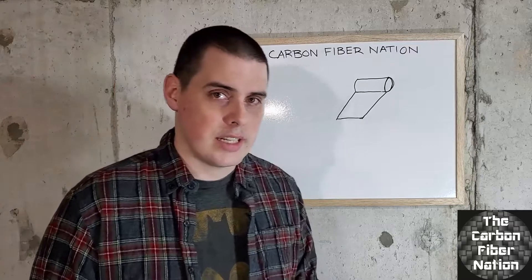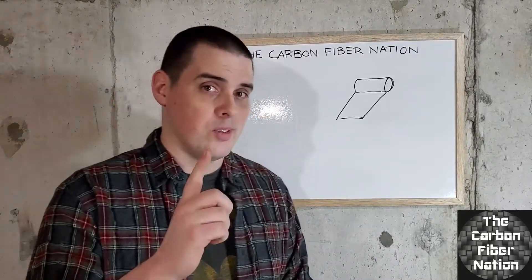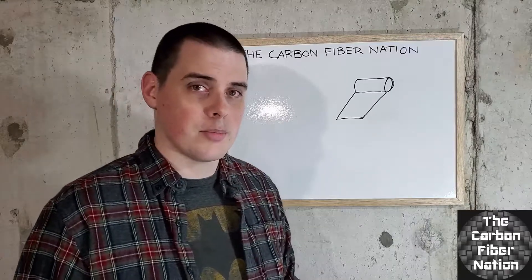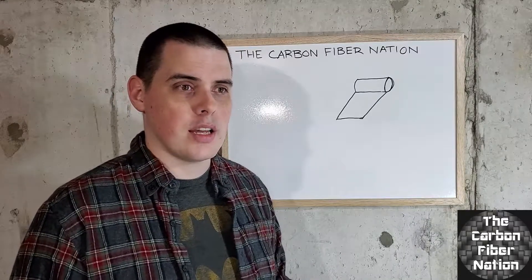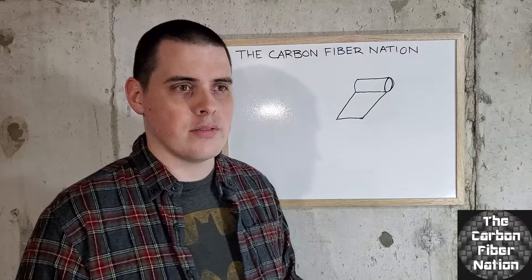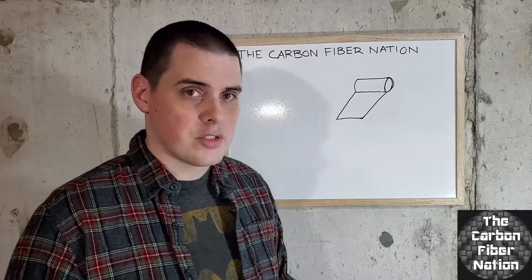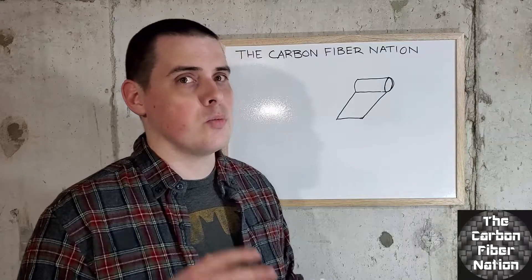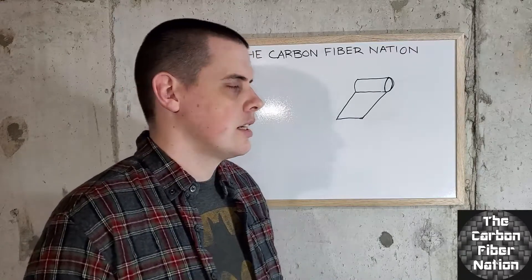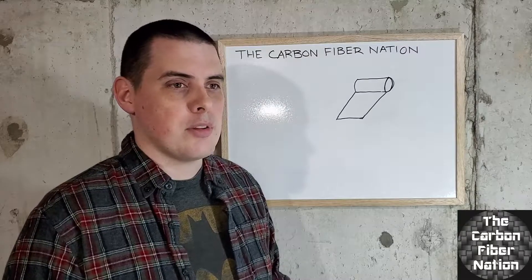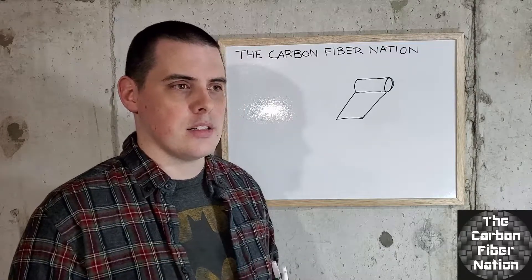First thing we're gonna be talking about today, episode 1, will be what are you looking at when you're looking at carbon fiber. Most carbon fiber comes in a twill or a woven fabric. There are some that don't, those are called unidirectional fibers where it only travels in one direction.